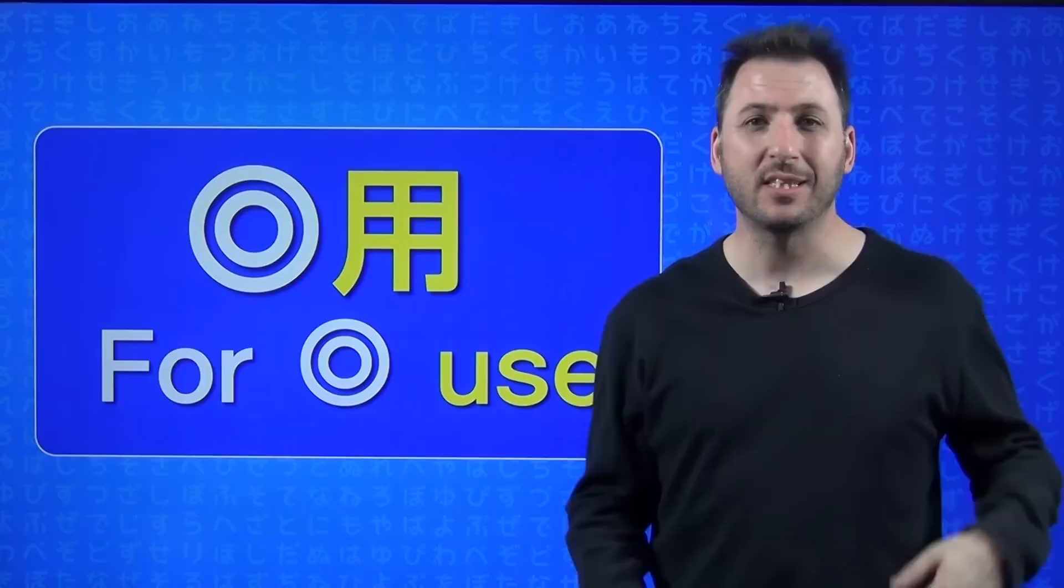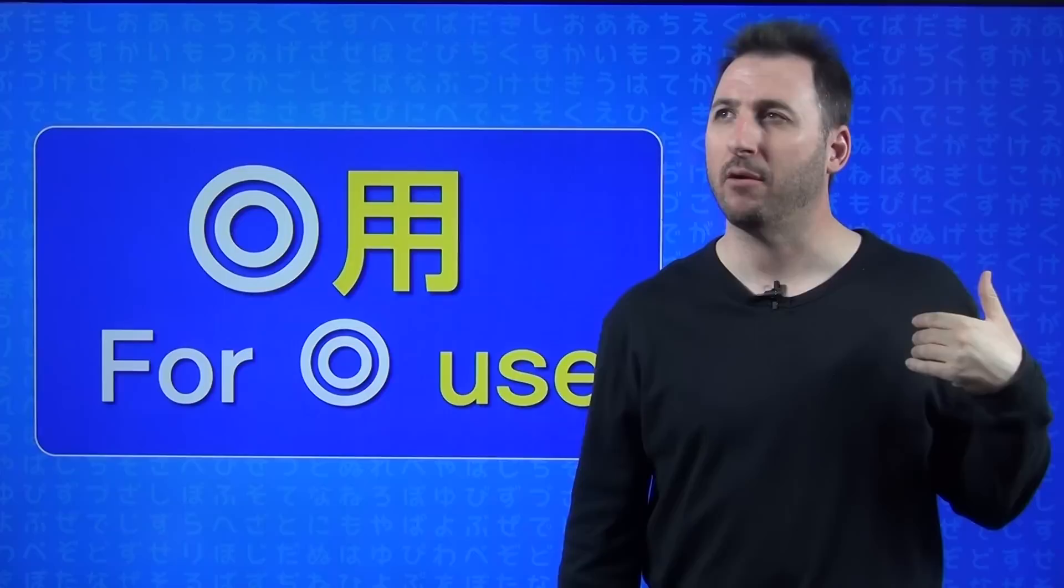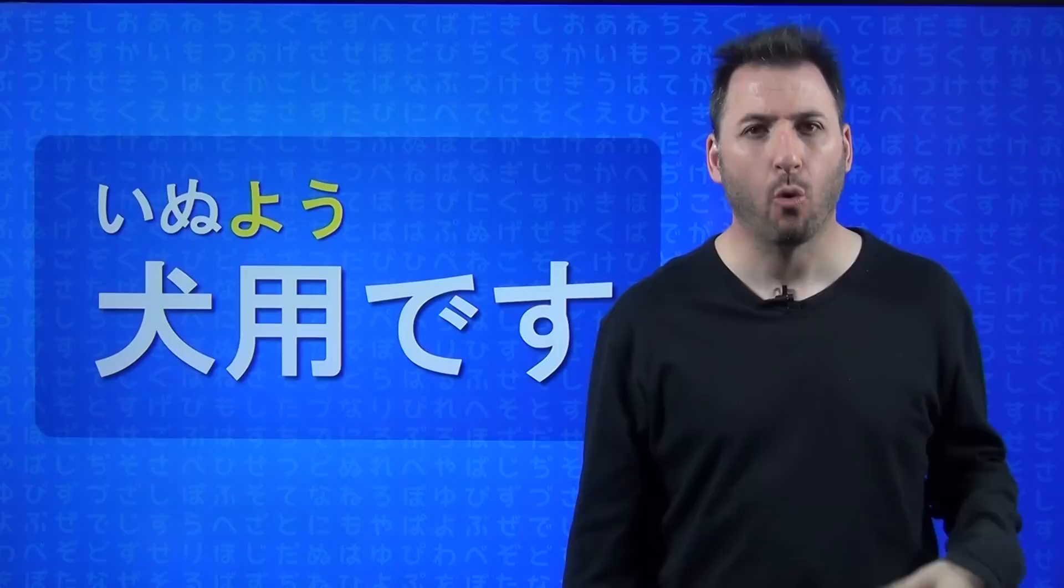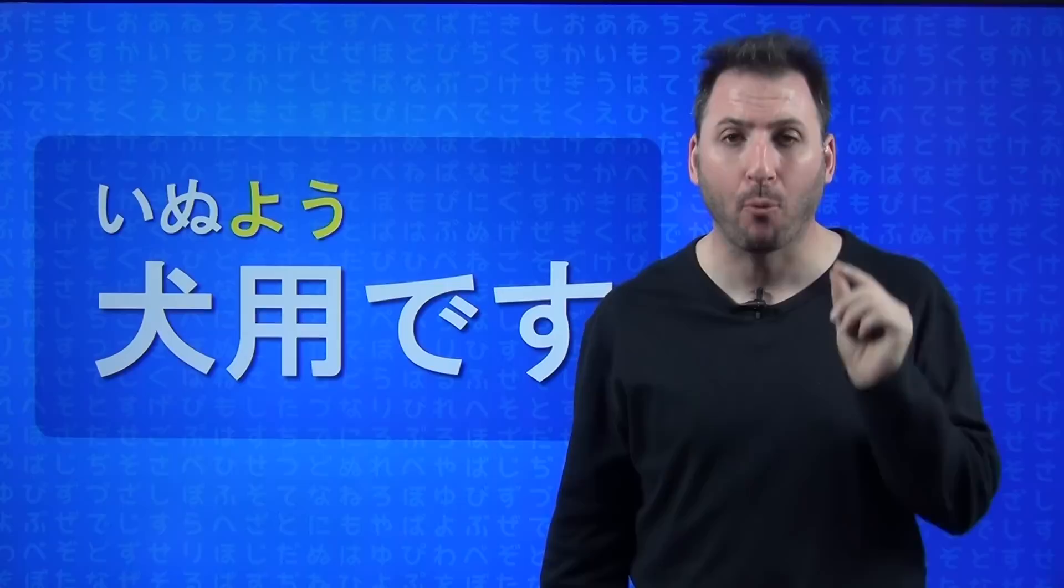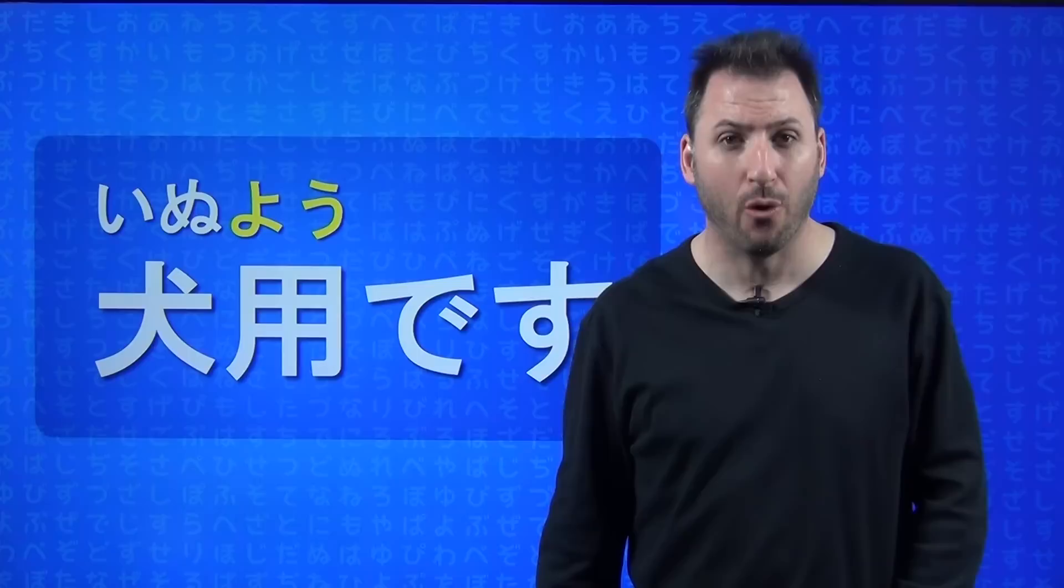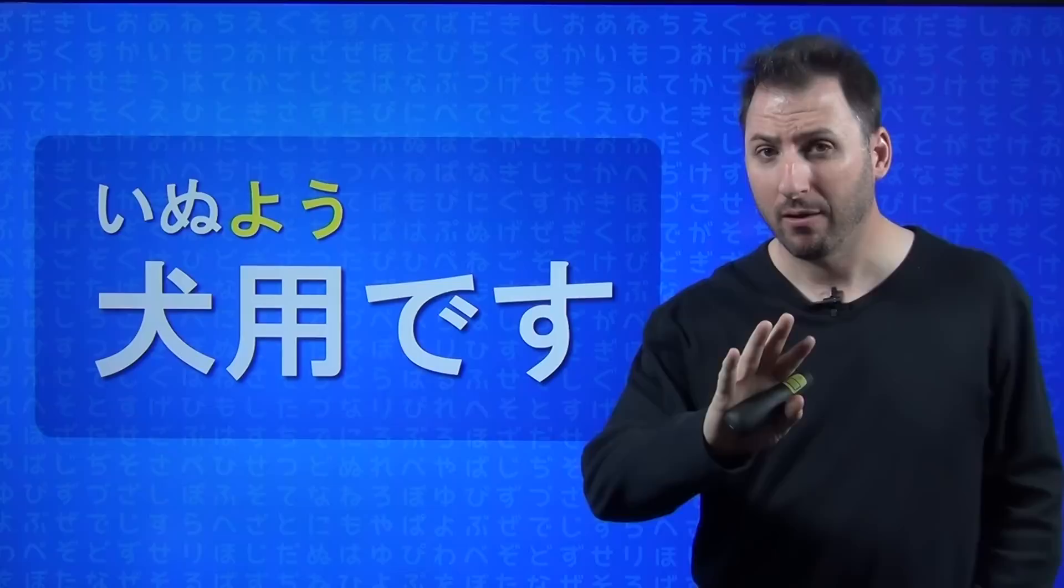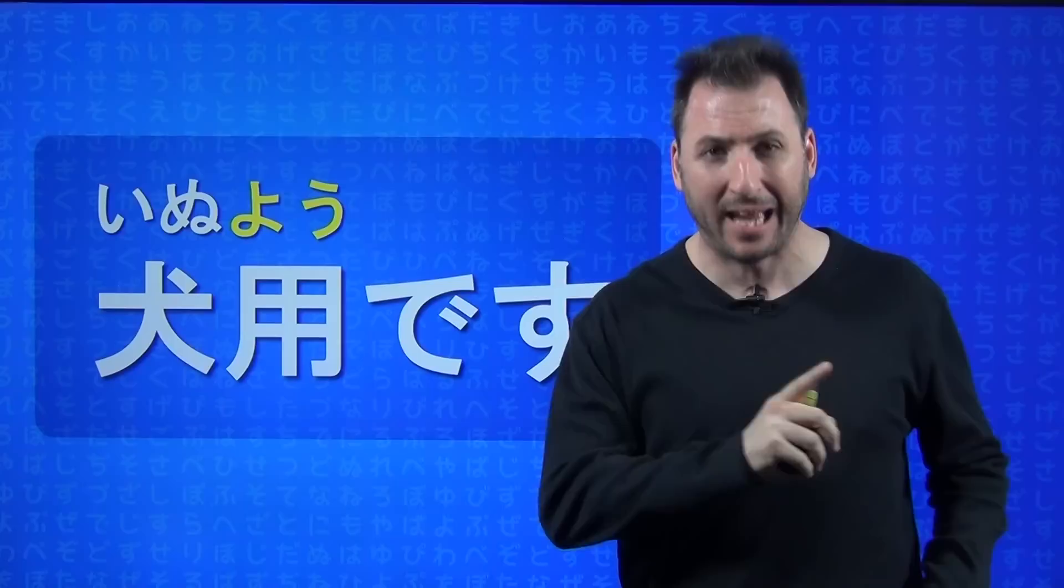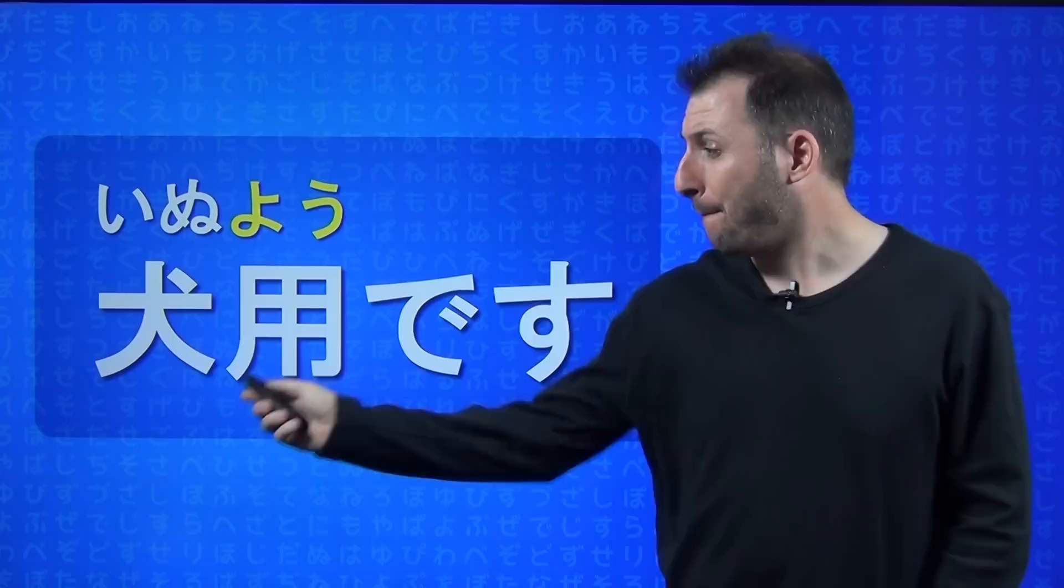For example, maybe there's food that looks delicious but it's actually inu yō - for dogs. Or doubutsu yō - for animals. You just put this yō, and this is the kanji for it. The yō comes immediately after the word - that's very important. There's nothing between the word and yō. Typically if you have two kanji together, you read the onyōmi. This is not the case here - it is inu yō, not kenyō.